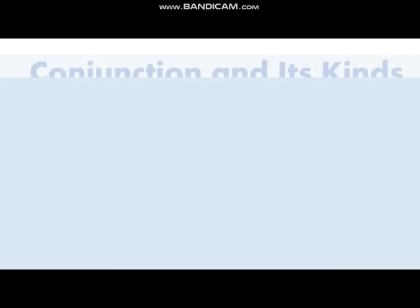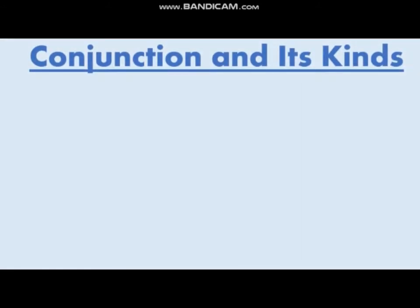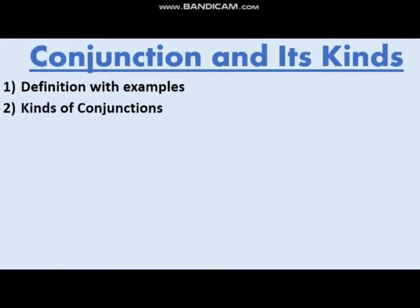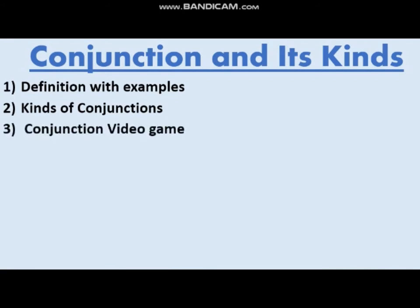Conjunction is a part of speech whose function is to join two words, sentences, or phrases together. They are also called linking words or connectors. For example, 'Gohar and Kazim are brothers' — Gohar and Kazim are two nouns joined with the help of 'and,' so 'and' is a conjunction here. Another example: 'Neither now nor his friends have come today' — neither and nor are conjunctions which join two subjects together.